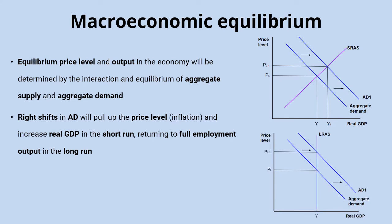But in the long run, because of the vertical long run aggregate supply curve under the classical model, the economy will return to the same level of output as before, since this is already the productive capacity of the economy, but the higher price level will persist.